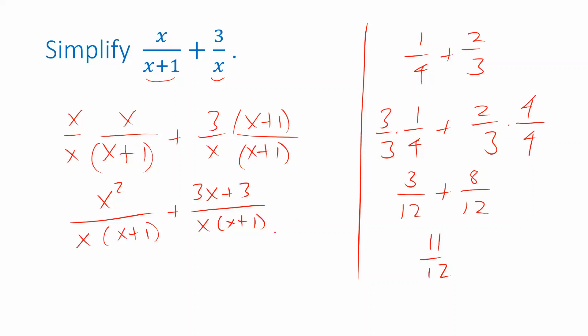Now, I can combine the two fractions because they have the same denominator by just adding the numerators. x squared plus 3x plus 3 over x times x plus 1. At this point, you might see if there's any more simplification you can do. If you can factor the numerator, you might be able to cancel with something in the denominator. But if not, then you can just leave it in this form. Or, you could expand the denominator and rewrite it as x squared plus x. Both of those would be correct.